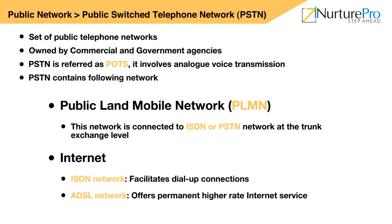Public land mobile network is a wireless communication service offered to subscribers. The network is connected to the ISDN or PSTN network at the trunk exchange level. The internet is a network that connects networks globally across various ISPs. It can be connected in two ways: via ISDN network or ADSL network. In an ISDN network, a dial-up connection is used, whereas an ADSL network offers a permanent high-rate internet service.